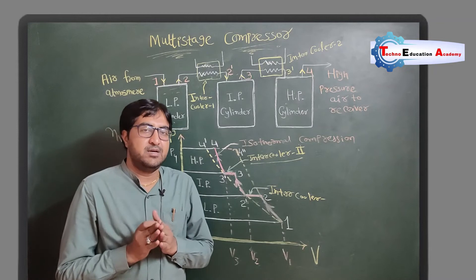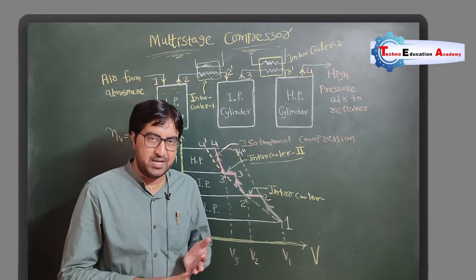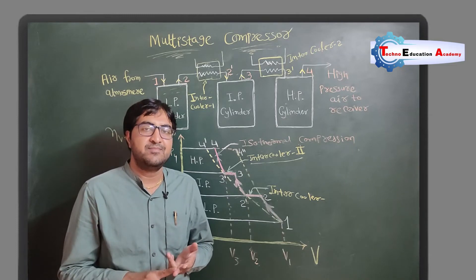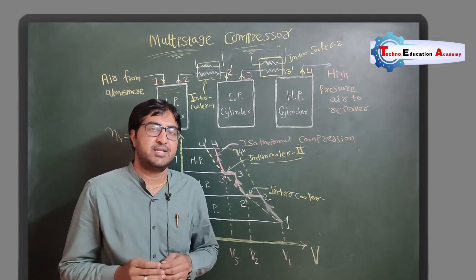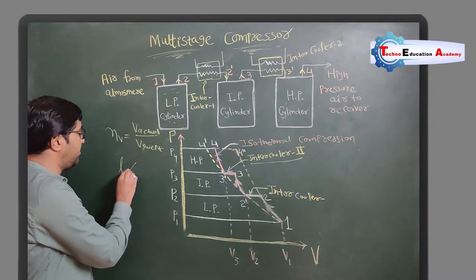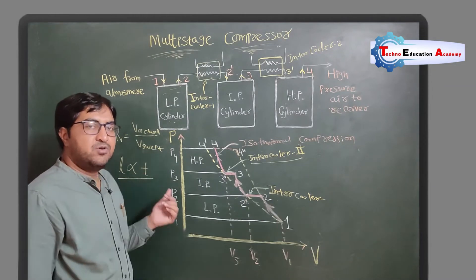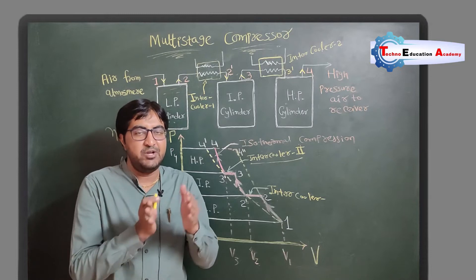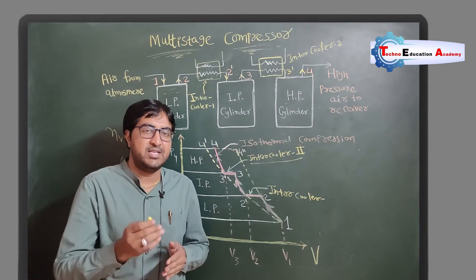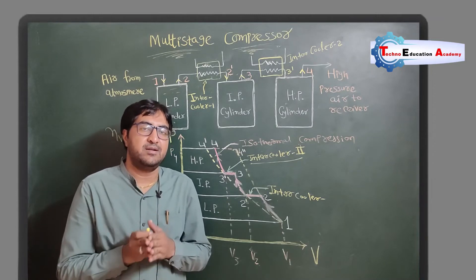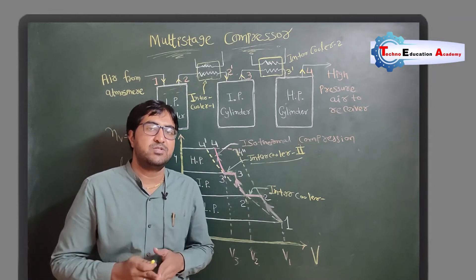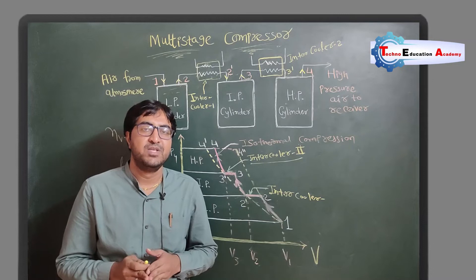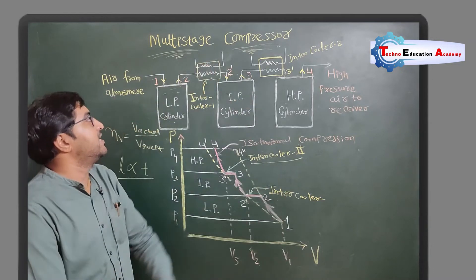When using a single stage compressor, we face problems related to lubrication at high temperature and volumetric efficiency decreases. Another disadvantage is that when temperature increases, thermal stress in the material also increases. Thermal stress is a function of l·α·T, so at higher temperatures we need to select stronger materials to resist the stresses generated, which increases material cost. These are all disadvantages of single stage compression at high compression ratios, which can be resolved using a multi-stage compressor.